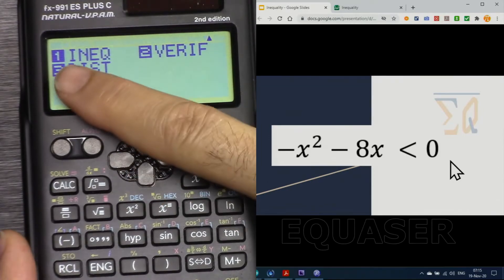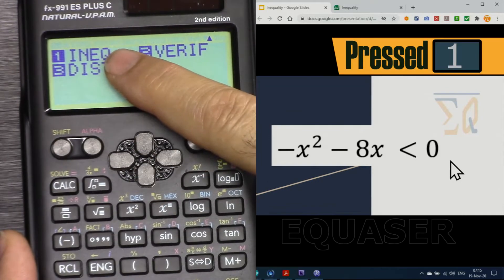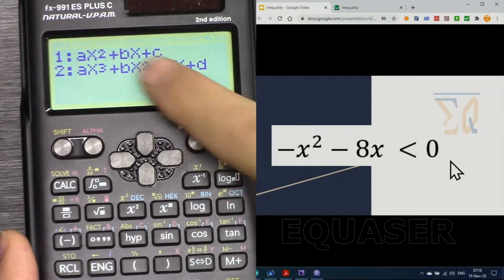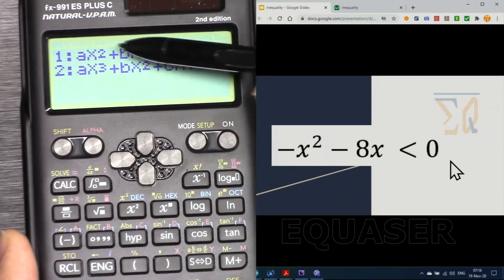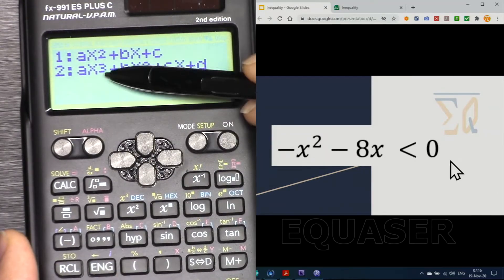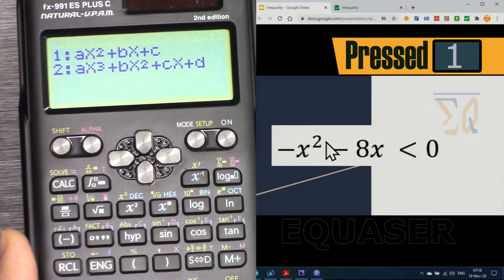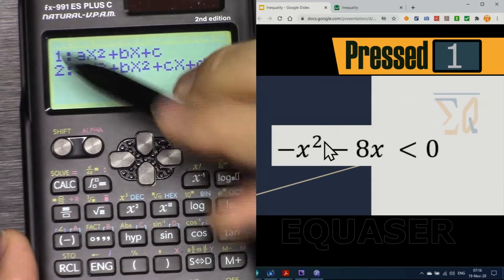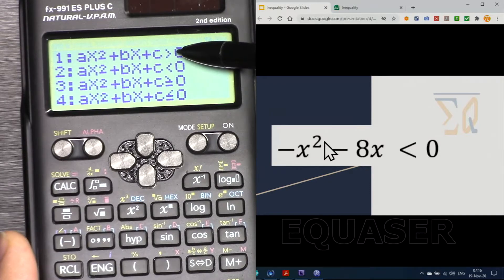Here, INEQ, inequality, press 1. And here it asks for the degree of the function: second degree or third degree. Because ours is second degree, I'm pressing 1.